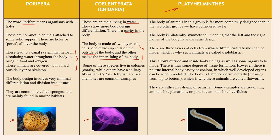The third family is Platyhelminthes. The body of animals in this group is far more complexly designed compared to Porifera and Cylenterata. The body is bilaterally symmetrical, meaning the left and right halves of the body have the same design. There are three layers of cells from which differentiated tissues can be made, which is why such animals are called triploblastic.